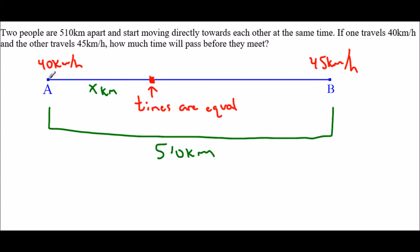We know that the total distance is 510 kilometers. So if the first person covers X kilometers, this distance, then the other person has to cover the rest. Well, the rest would be 510 minus X kilometers. So that's what's left over for the other person to cover. So again, when they meet, the times that they've traveled will be equal and the distances will be X kilometers and 510 minus X.